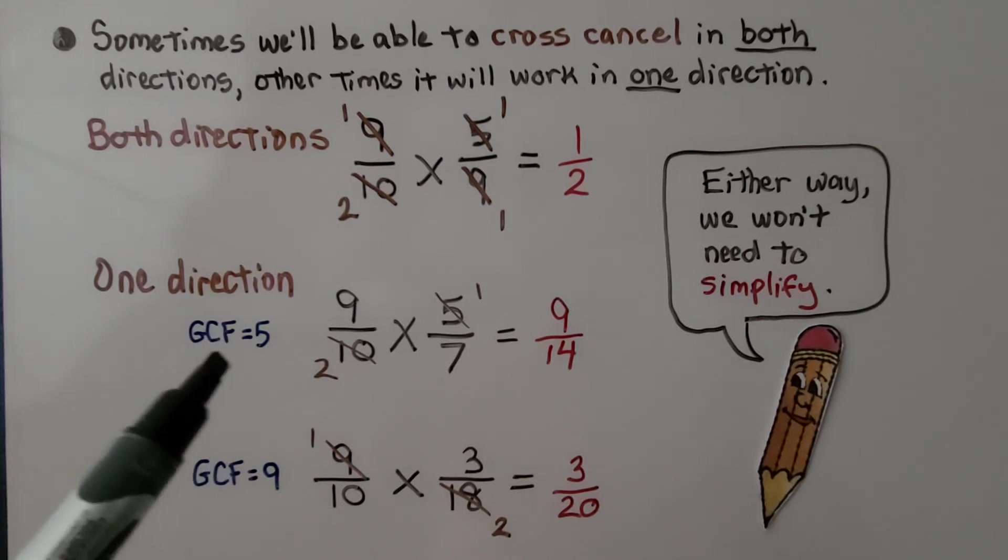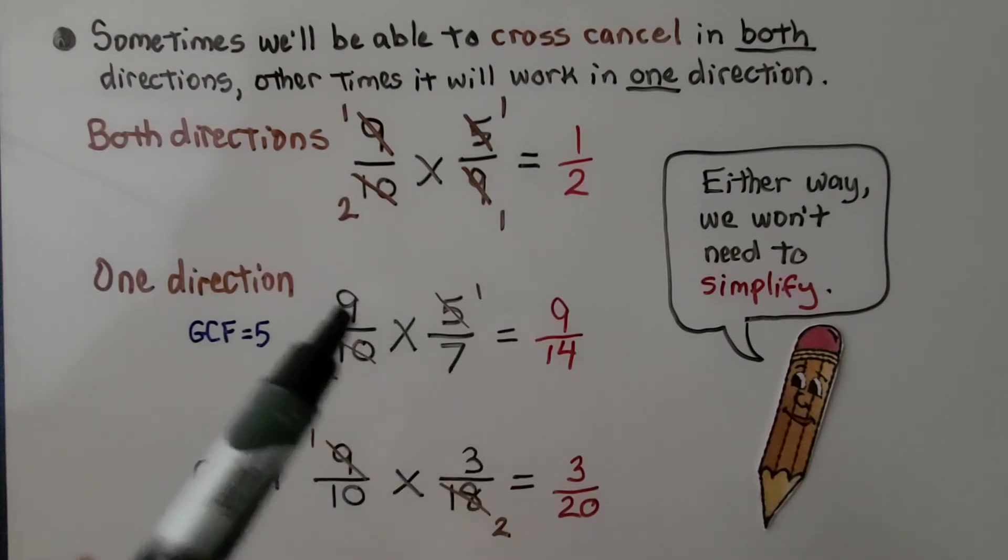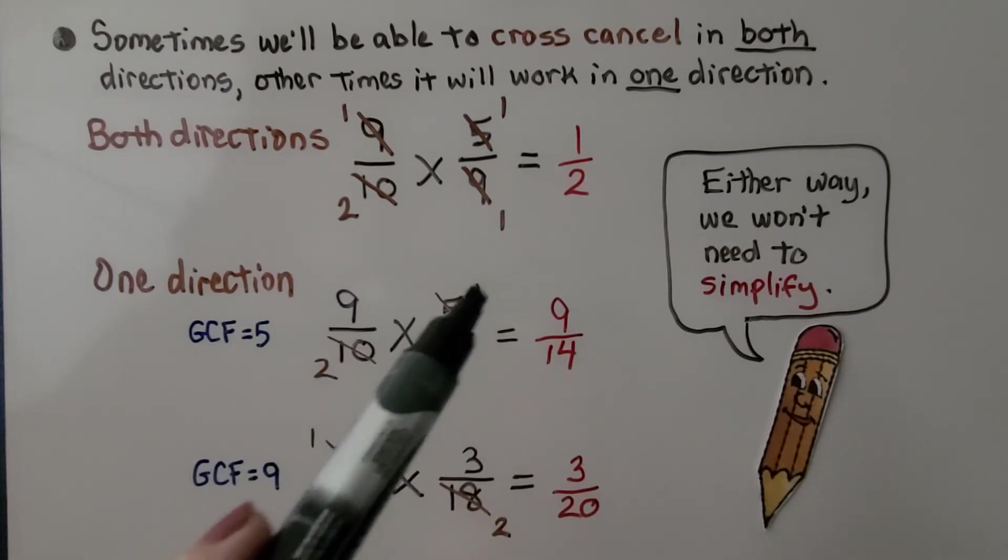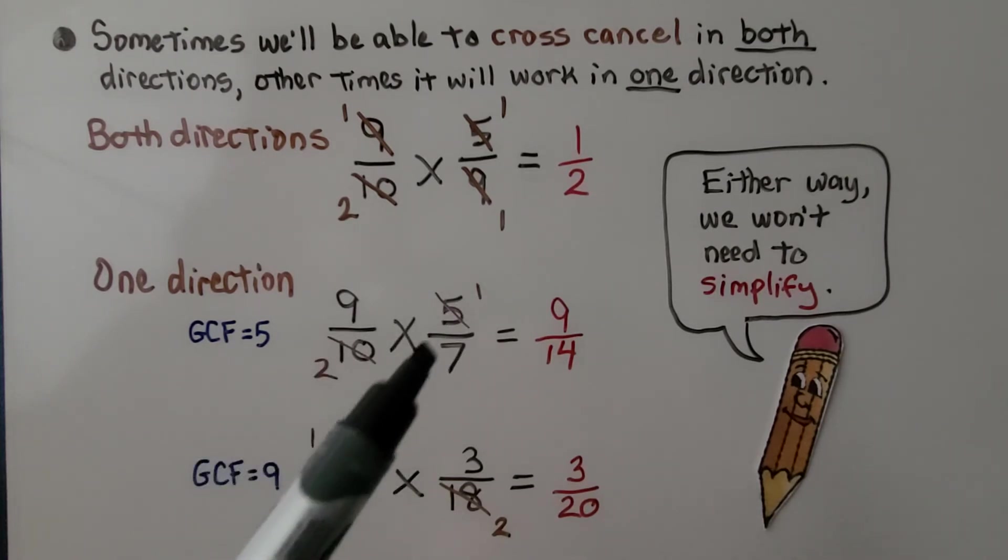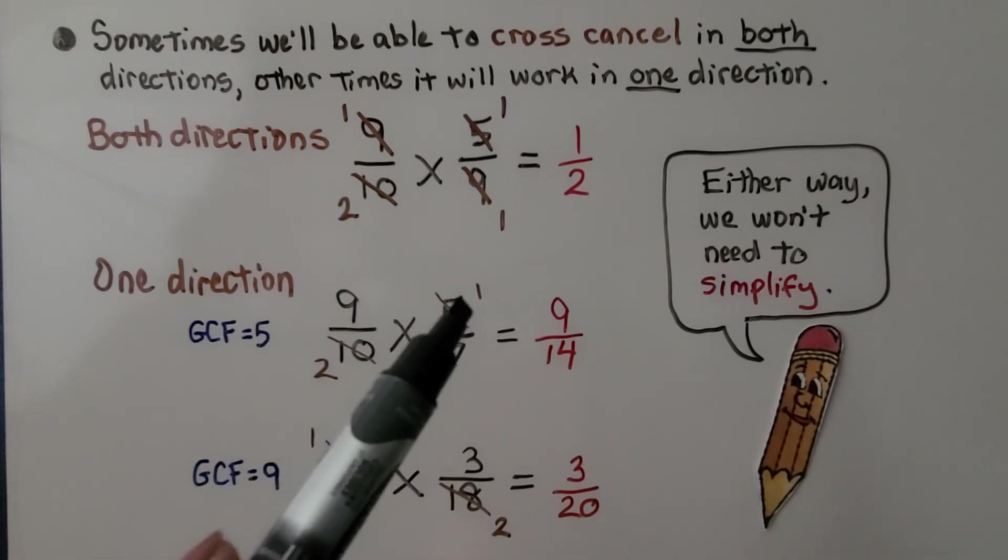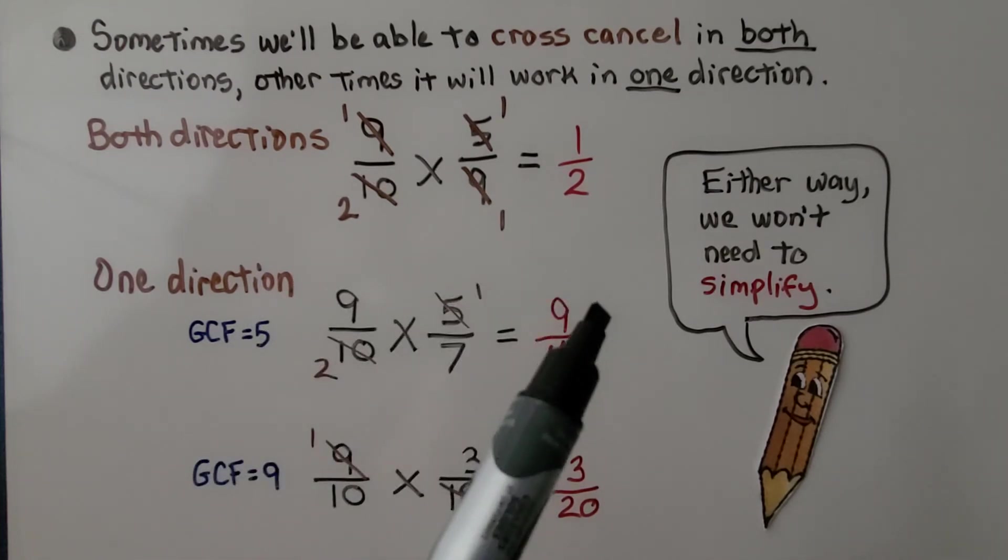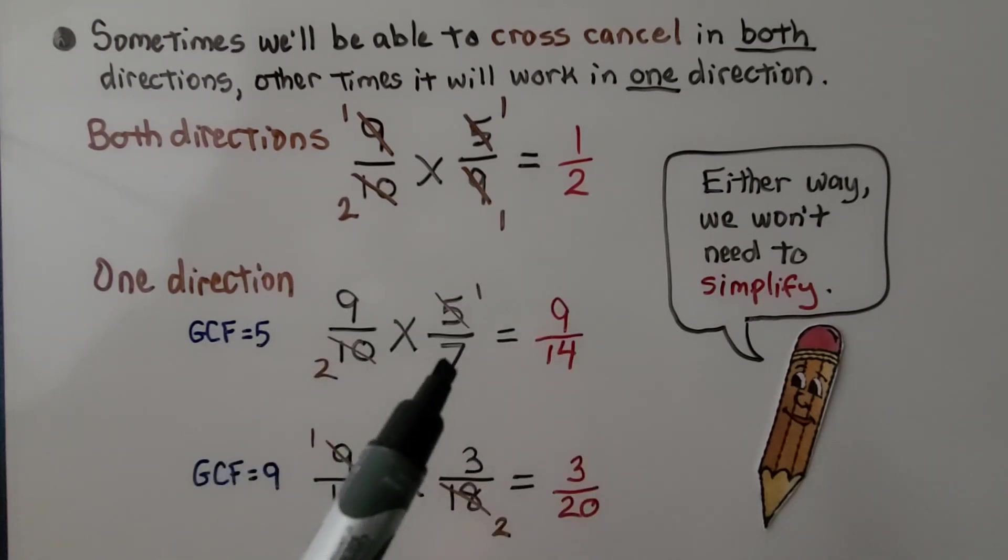For one direction, we've got no greatest common factor. We have no common factors for 9 and 7, so we're going to ignore this. We're just going to cancel out these. The GCF for 5 and 10 is 5. 1 times 5 is 5, and 2 times 5 is 10. This cancels out as a 1 and that as a 2. Now we do 9 times 1 is 9, and 2 times 7 is 14. We don't need to simplify.